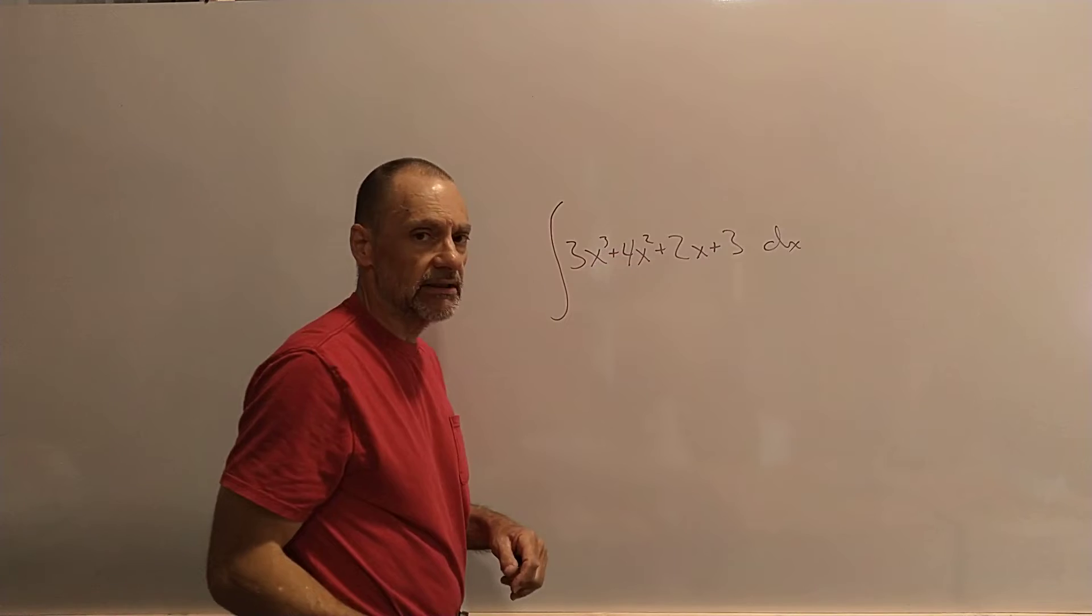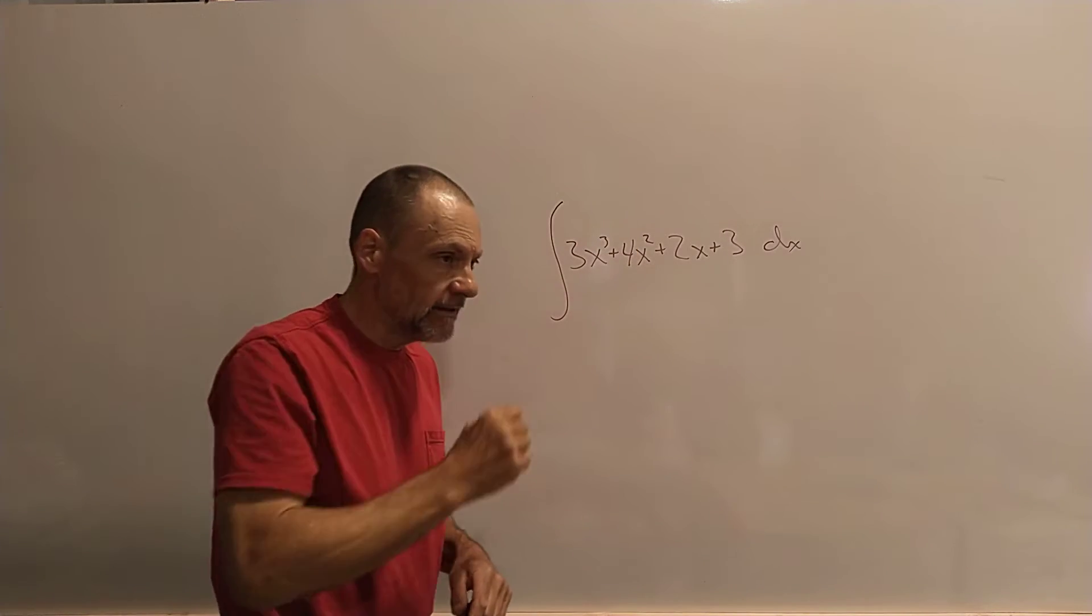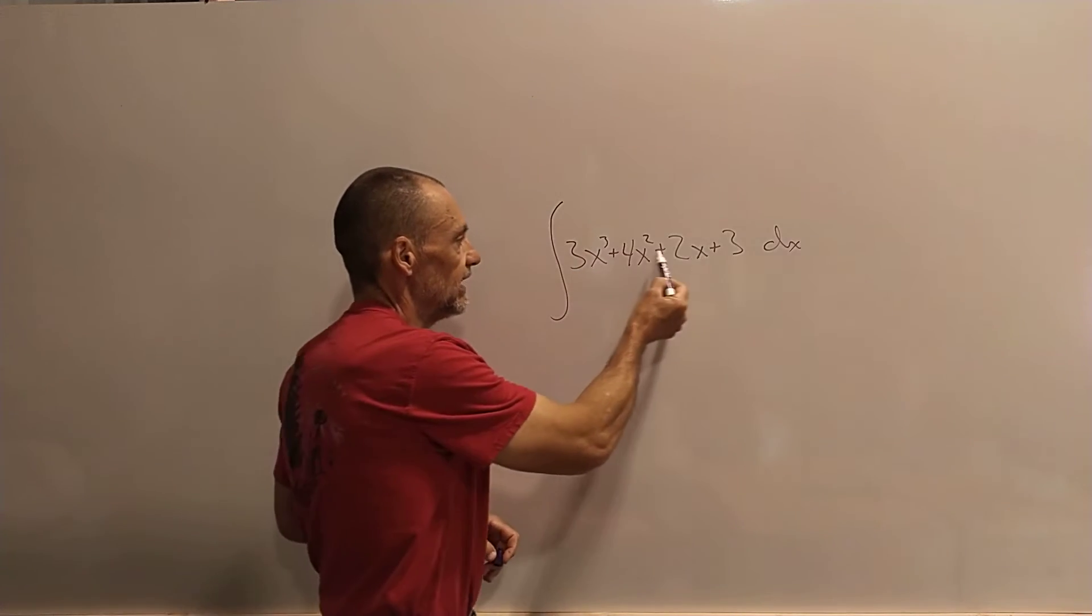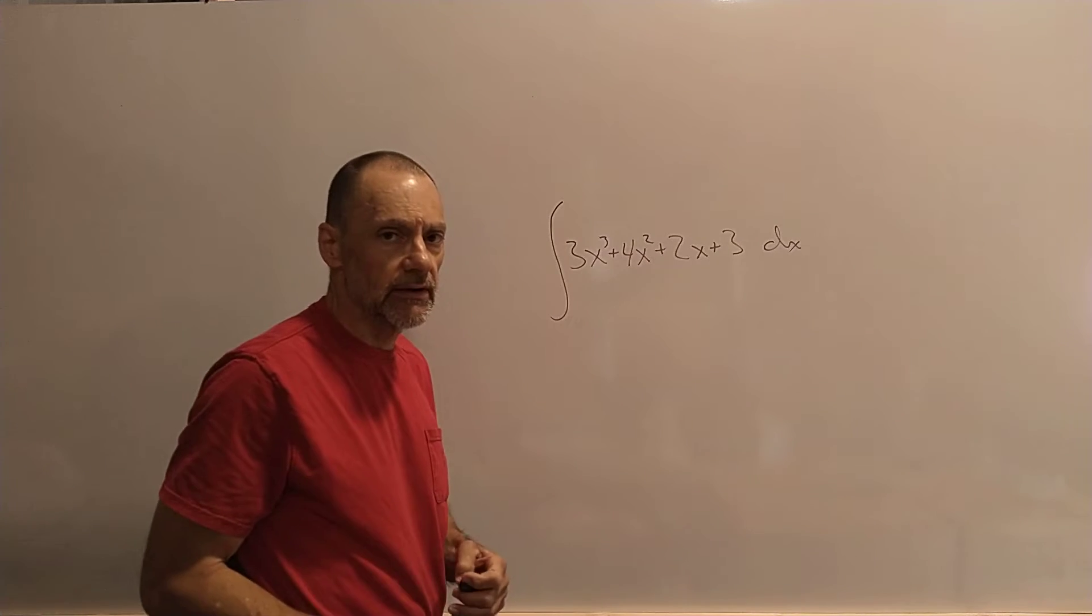Because this is super easy. We just add one to the exponent, multiply by the reciprocal. And the integral of a sum, the sum doesn't change anything. So this is a very, very easy integral, right?